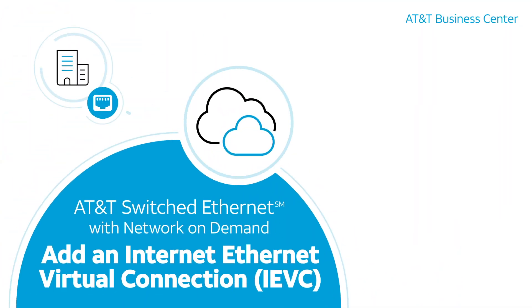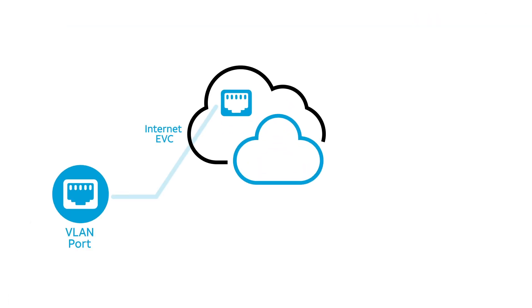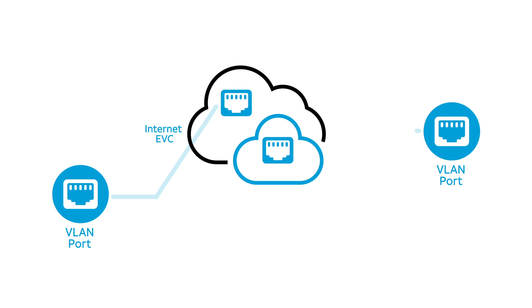If you have AT&T switched Ethernet with Network on Demand, it's easy to add an Internet Ethernet Virtual Connection, or Internet EVC. An Internet EVC connects a port to the Internet. Only one Internet EVC can connect to each port, and only to a virtual LAN-based or VLAN port. Here's how to add an Internet EVC.